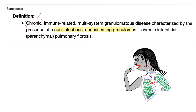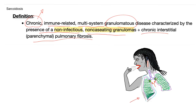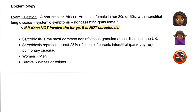It's a chronic disease — if it started yesterday, it's not sarcoidosis. It is an immune-related, multi-system granulomatous disease characterized by the presence of non-infectious, non-caseating granulomas plus chronic interstitial pulmonary fibrosis. You see pulmonary fibrosis and hilar lymphadenopathy, and the hilar lymphadenopathy contains non-caseating granuloma. The exam question will describe a non-smoker African-American female in her 20s or 30s with interstitial lung disease, systemic symptoms, and non-caseating granuloma. If it doesn't involve the lungs, it's not sarcoidosis. It represents 25% of cases of chronic interstitial pulmonary disease, and is more common in women and more common in Blacks.